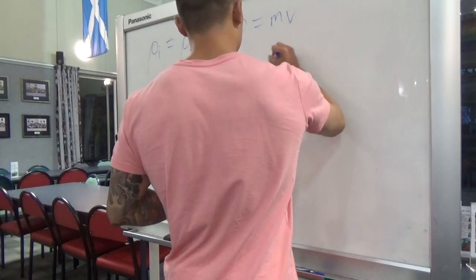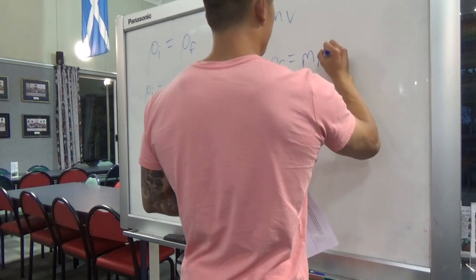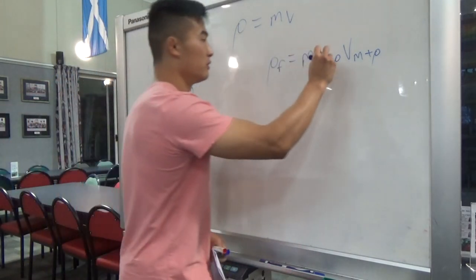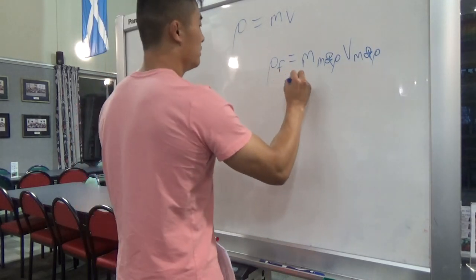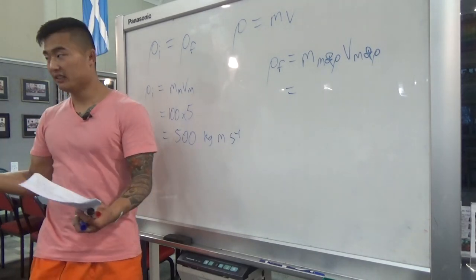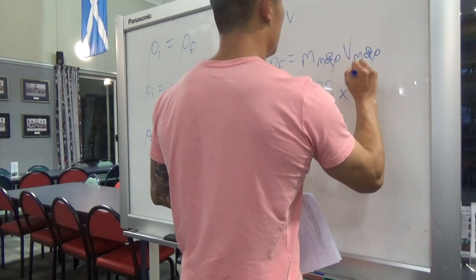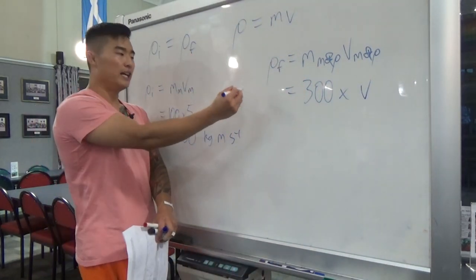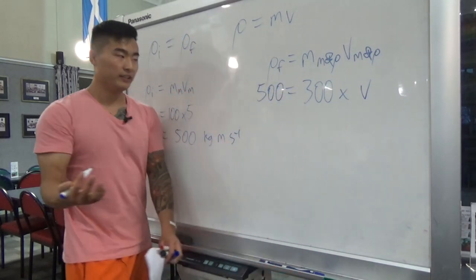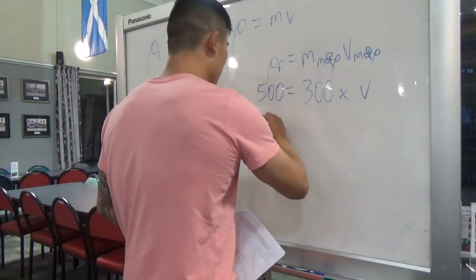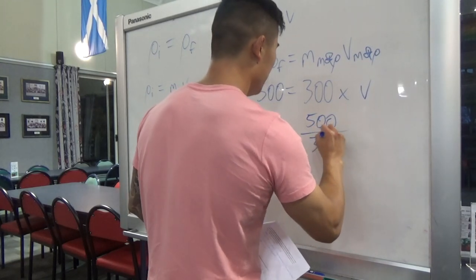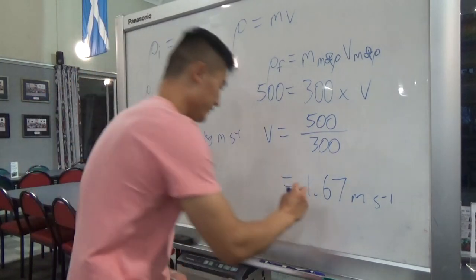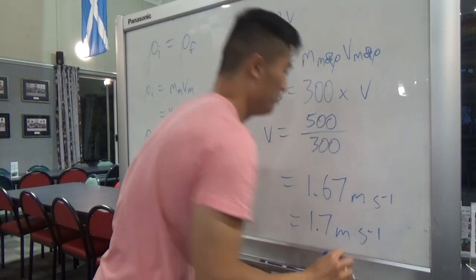After the collision there's one object — the man and platform together. Final momentum equals combined mass times final velocity: 300 kg times V. Since initial equals final momentum: 500 equals 300V, divide both sides by 300. V equals 500 over 300, giving 1.67 meters per second, or approximately 1.7 meters per second.